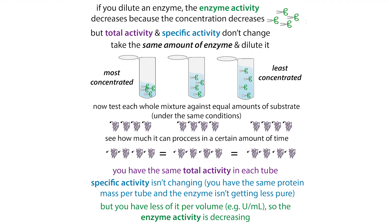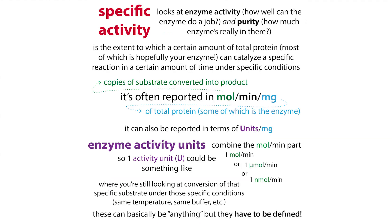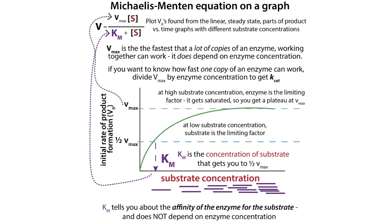Your specific activity could be lower because your preparation is impure or because your enzyme is less active. But if you're taking the same enzyme, it should have the same specific activity unless there are differences in purity. You can compare specific activity between different enzyme preparations or between a wild type and a mutant to compare activities — but you want to compare specific activity, not just activity, because activity depends on the concentration of your enzyme, similar to how velocity depends on enzyme concentration.